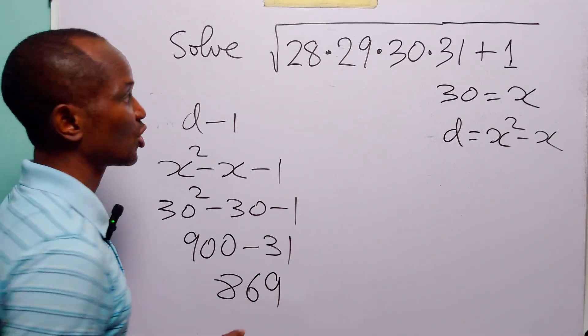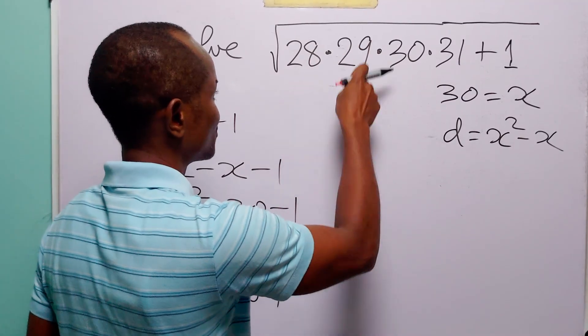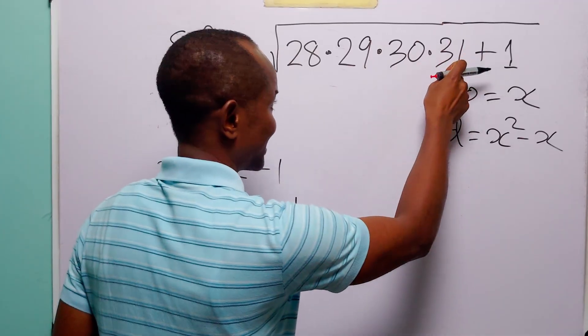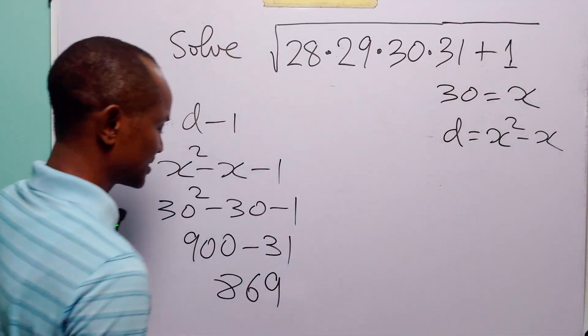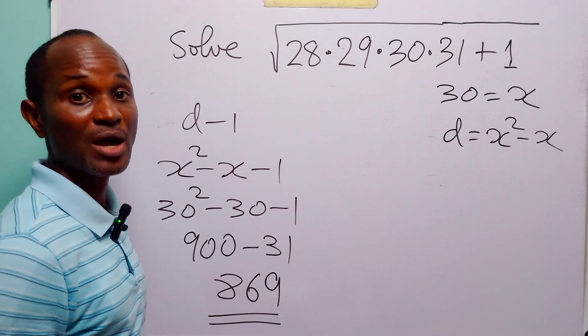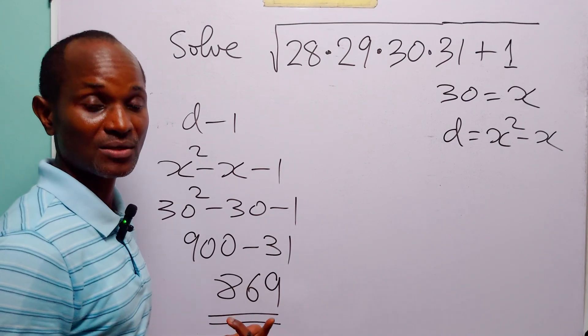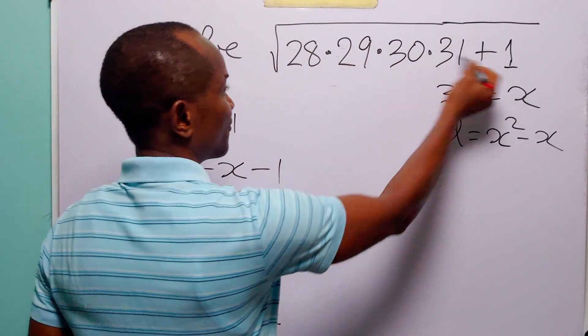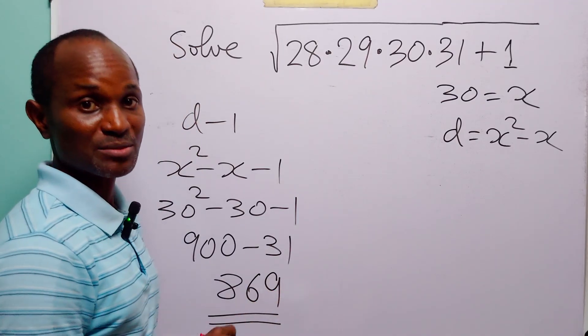So we have that the square root of the product of 28, 29, 30 and 31 plus 1 is equal to 869. And we have found this without using calculators or doing very large multiplications.